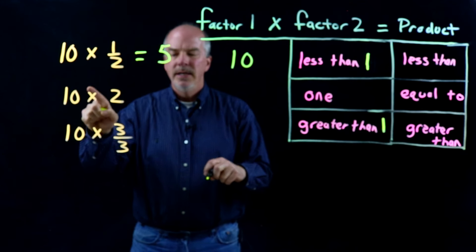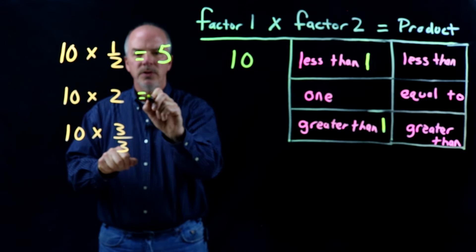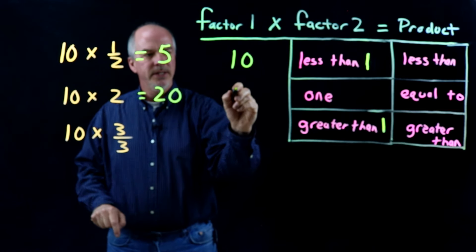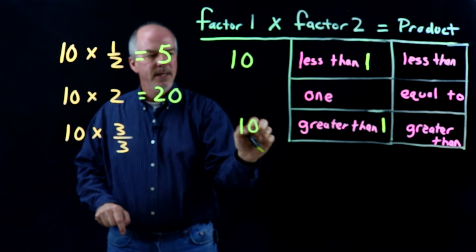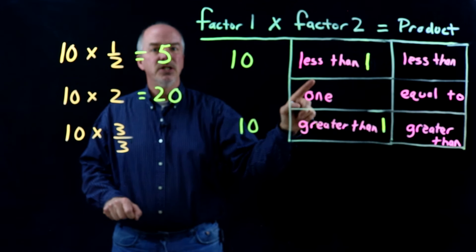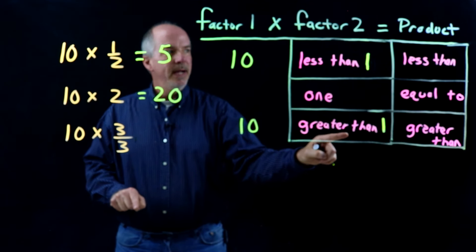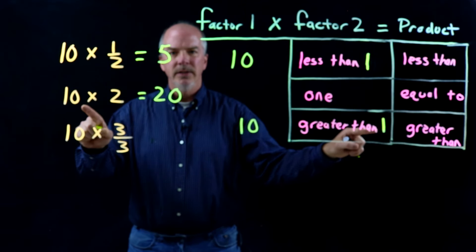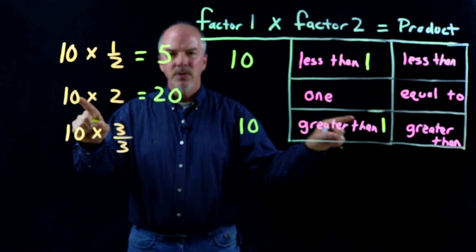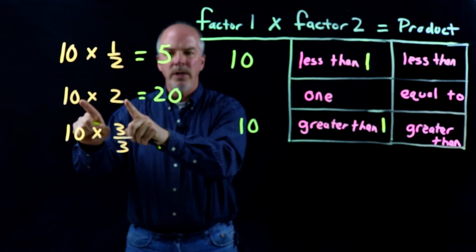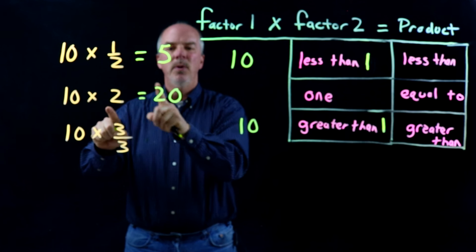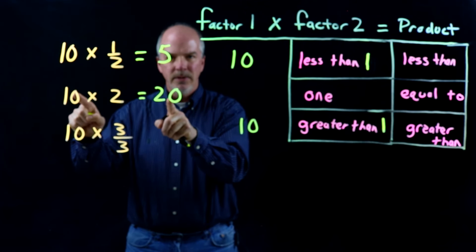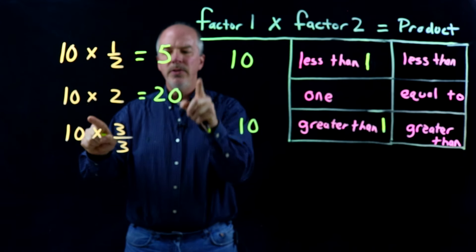Let's look at this one: 10 times 2. I know that equals 20. If I multiply my first factor, 10, times a second factor that's greater than 1, then my product or my answer will be greater than that first factor. So 10 is what I started with; I multiplied it by something greater than 1, and my product is greater than 10, which is 20.